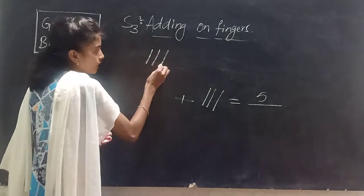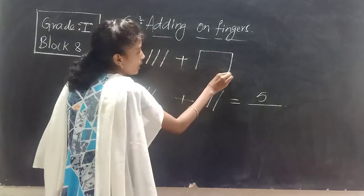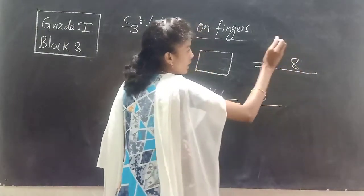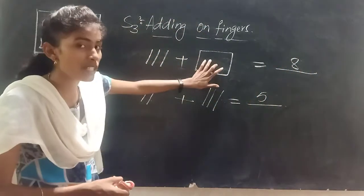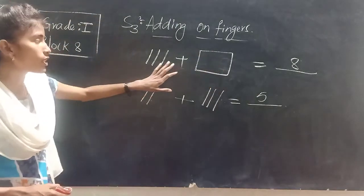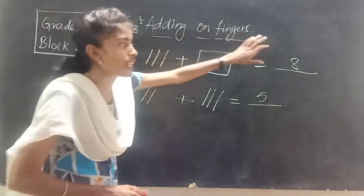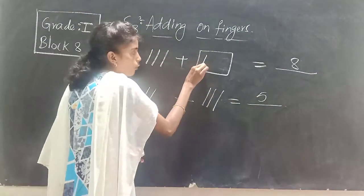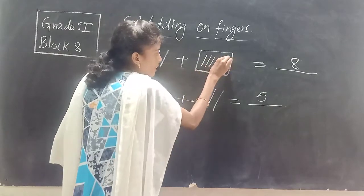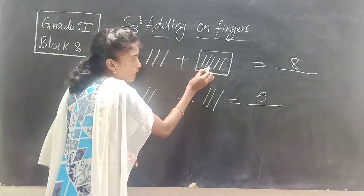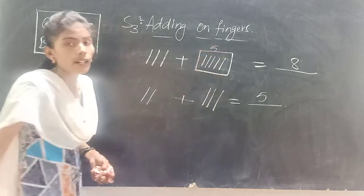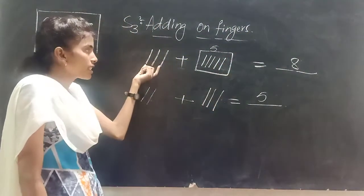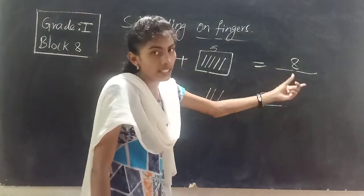Now I have three fingers here, and I don't know how many fingers I have in the second hand. Total I have eight fingers. Which number is missing? Three fingers already are there, total eight fingers. To get to eight from three, how much should we add? Three after: four, five, six, seven — so five fingers will be there. After a known number, we can count on until we get the total number.